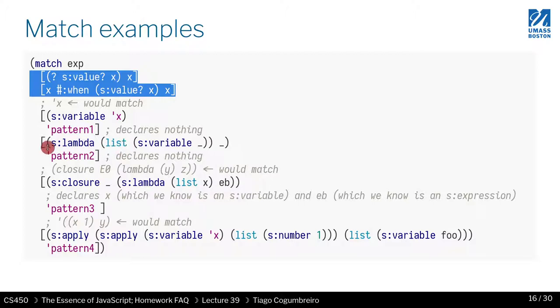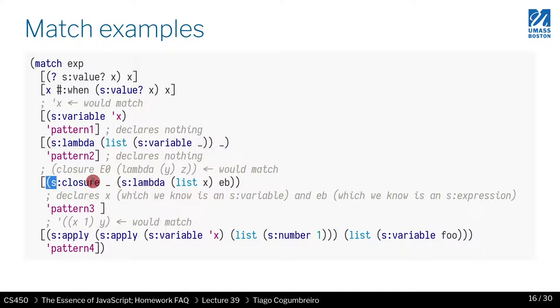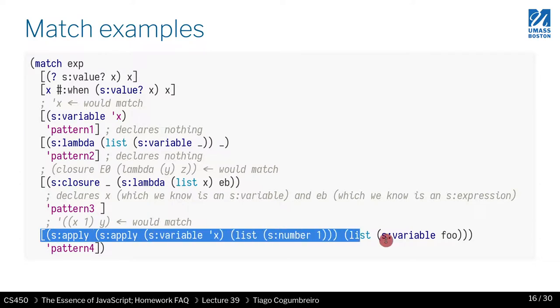Another thing that you can do in pattern matching is that you can have nested definitions. For instance here what we're saying is that we have a lambda and inside that lambda we have a list that contains only exactly one thing and that thing is a variable. In this case I use the underscore because I don't care but you could have written x. Another example is you have a closure where you have some environment and then inside of that closure you have a lambda with a list with a single variable and then you have a value. Similarly you can define pattern matching to write nested function applications.